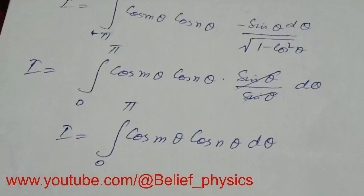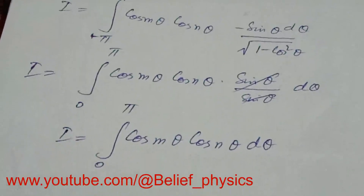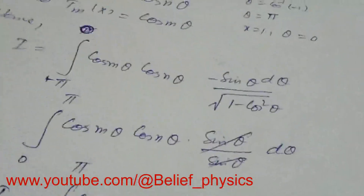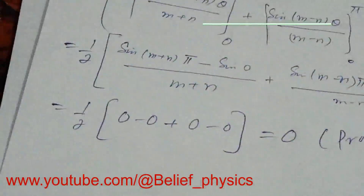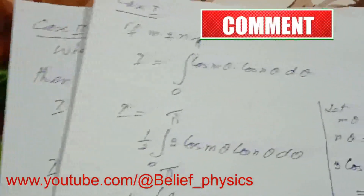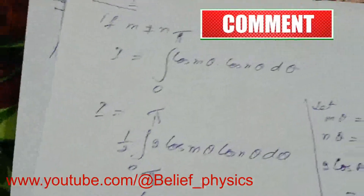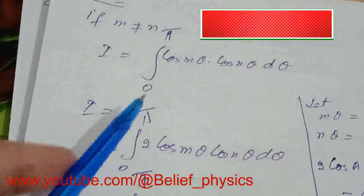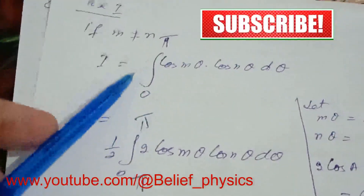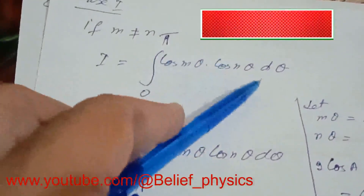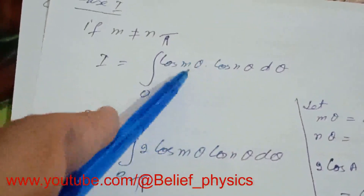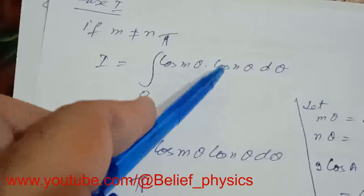We have three cases. The first case is when m is not equal to n. When m is not equal to n, the integral becomes the integral from zero to pi of cos(m theta) cos(n theta) d theta.